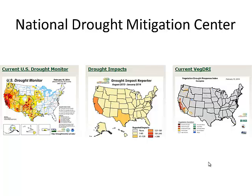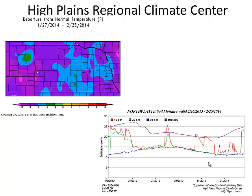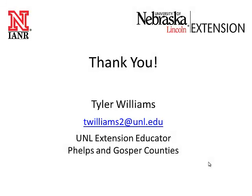The High Plains Regional Climate Center can get you maps like the 30-day departure from normal temperature — we're about 8 to 10 degrees below normal for average temperature over the last 30 days. You can look at two weeks, six months, or rainfall — anything you want as a map. They also have soil moisture data so you can see what soil moisture has been doing throughout the last year, including when big rainfall events occurred. That's climate and weather for our area and a bit about soil temperature.